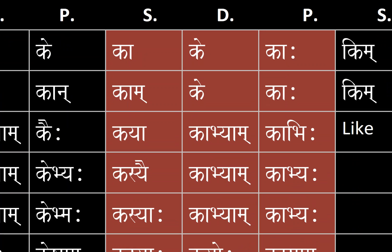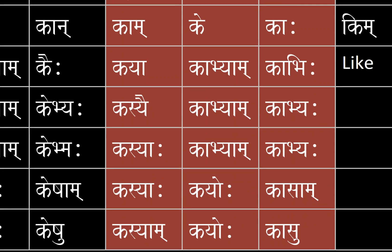For dative singular, dual, and plural we have kasyai, kābhyām, and kābhyaḥ. For ablative singular, dual, and plural we have kasyai, kābhyām, and kābhyaḥ.